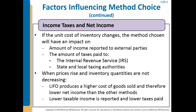If the unit cost of inventory changes during a period, the inventory method chosen can have a significant effect on the amount of income reported to external parties, and also on the amount of income taxes paid to the IRS, along with state and local taxing authorities. Over the entire life of the company, cost of goods sold for all years will equal actual costs of items sold regardless of the inventory method. However, different inventory methods can produce significantly different results in each particular year.